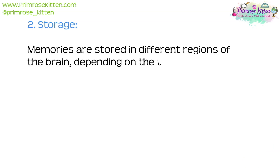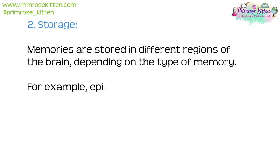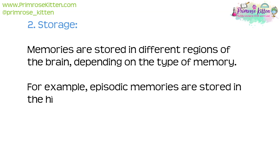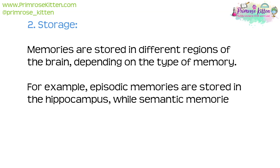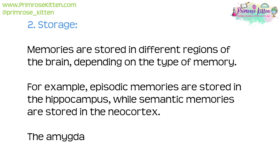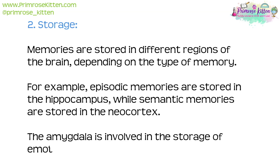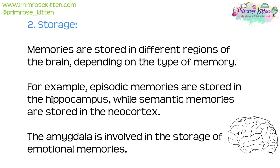Step 2: Storage. Memories are stored in different regions of the brain, depending on the type of memory. For example, episodic memories are stored in the hippocampus, while semantic memories are stored in the neocortex. The amygdala is involved in the storage of emotional memories.